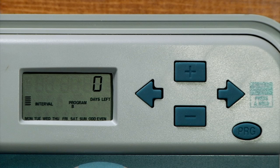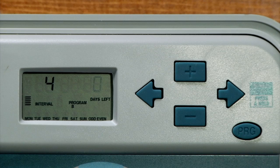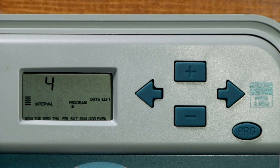Now we've set up a four-day interval, and we want it to start tomorrow, for example. So we'll use the right arrow to make the days left number flash, and we'll use the plus button to go up to, say, one day left.